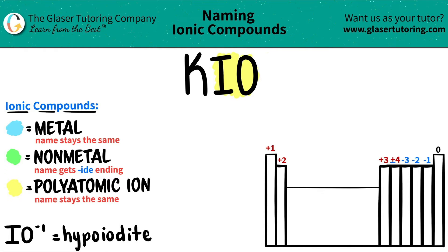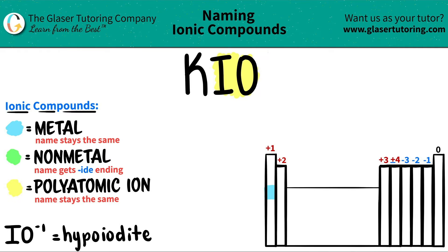The element that's left is potassium, which is K. If we look at where potassium is on the periodic table, it's right here — it's in group one. All of group one are metals except for hydrogen, so K, potassium, is a metal.